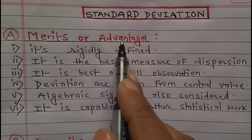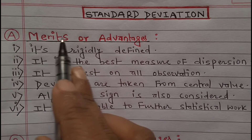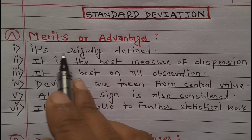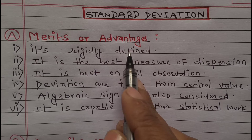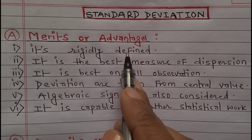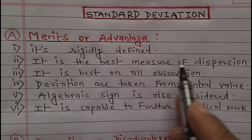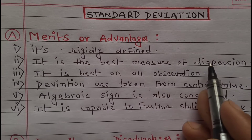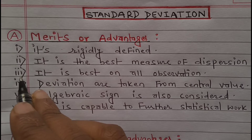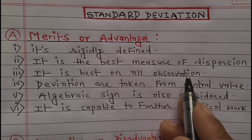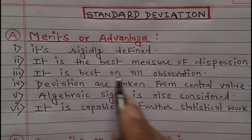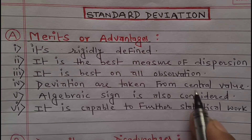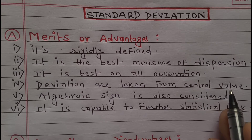The merits or advantages of standard deviation: Point one — it is rigidly defined. Point two — it is the best measure of dispersion. Point three — it is based on all observations.